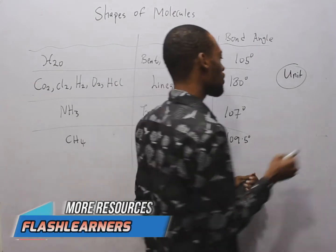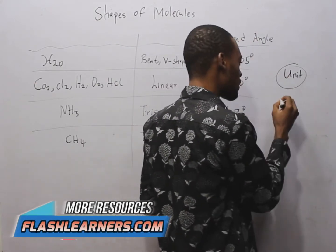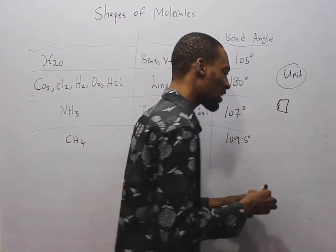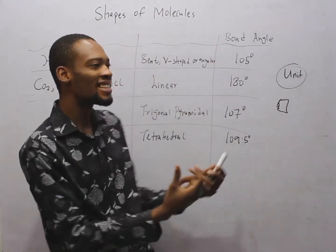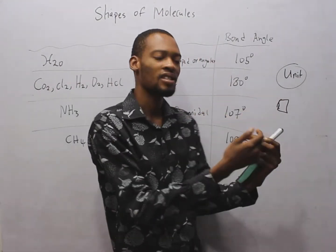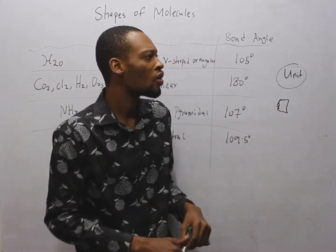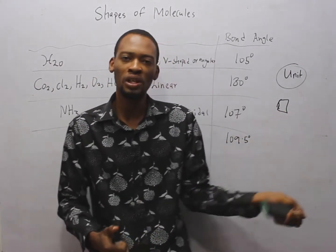For example, if you have this substance, this block, the smallest particle of that block that can stay on its own and still retain the color, the properties of that particular substance or compound is referred to as molecules.